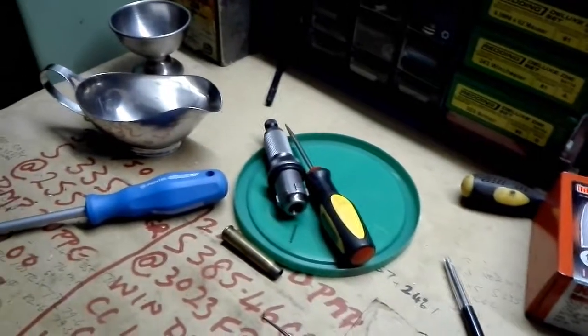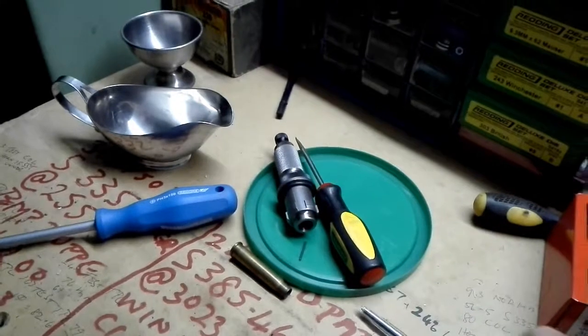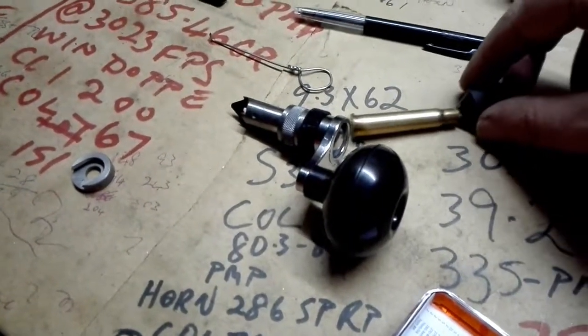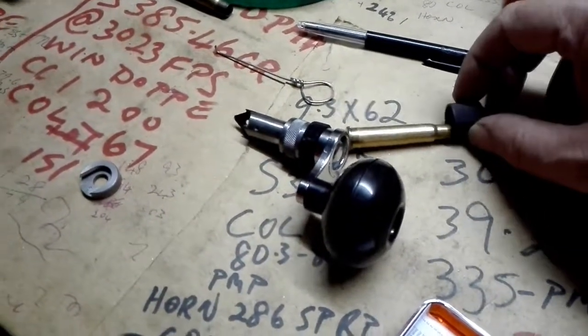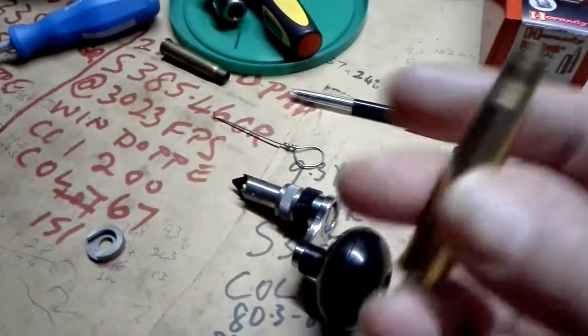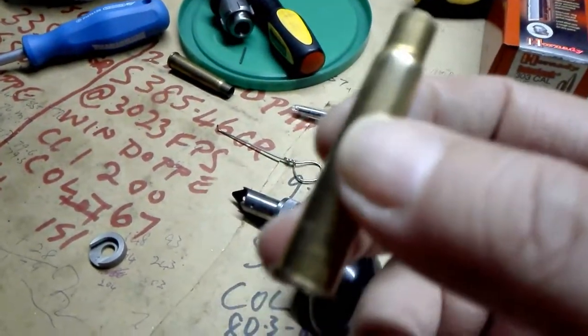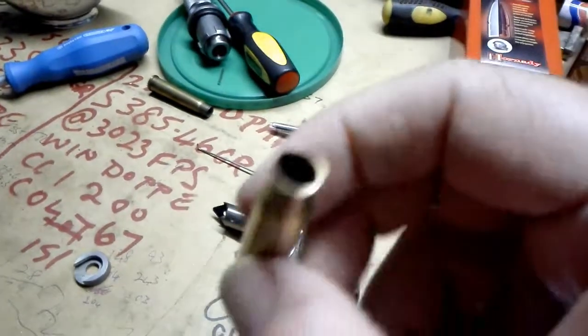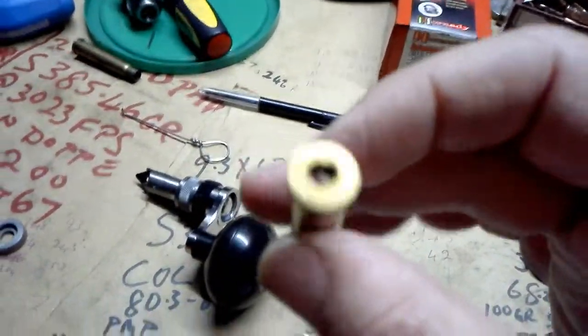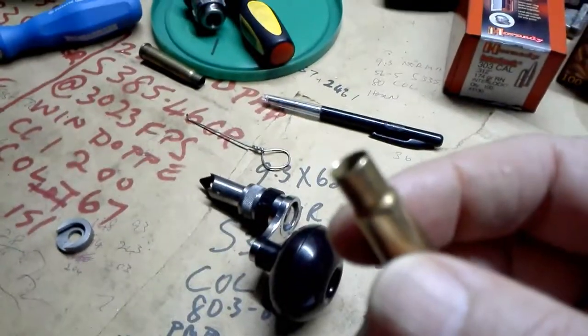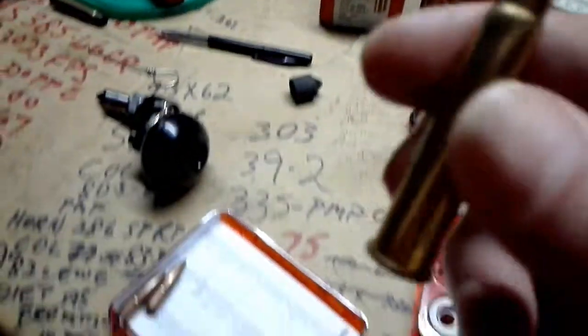But if it doesn't do it to the right amount that you require, you simply use this deburring and chamfering tool again to get your case to requirement. What I did next as a next step was to brush, to clean it out basically, get the soot out of the cases with a brush.